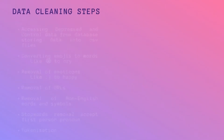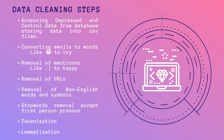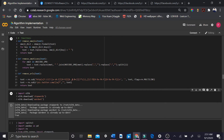Data cleaning steps: first, we accessed the data from the database and stored it into CSV files. Afterwards, we converted emojis to words, and then removed the emoticons and converted them into words. Next, we removed URLs. This is the code for all the data cleaning steps discussed so far.